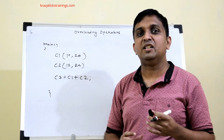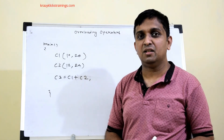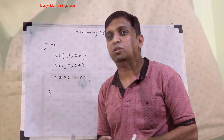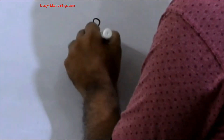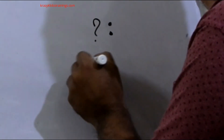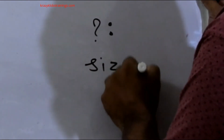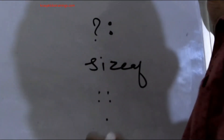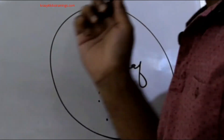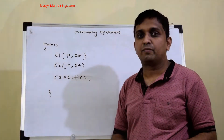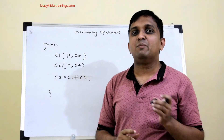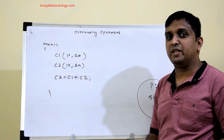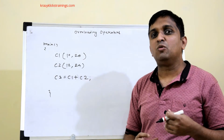In C++ there are four operators which we cannot overload: ternary, sizeof, scope resolution (::), and dot (.). These four operators cannot be overloaded. Unary and binary operators can be overloaded apart from these, and we will see how to overload them.